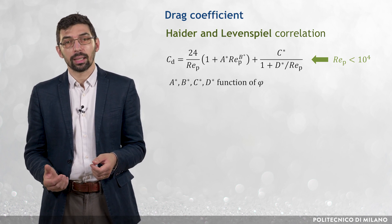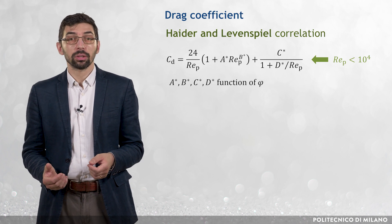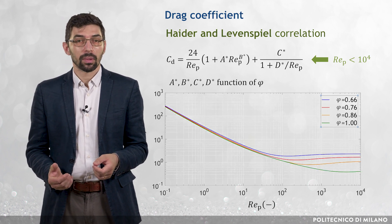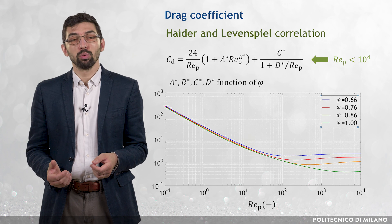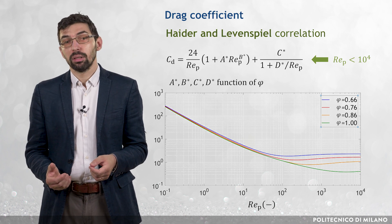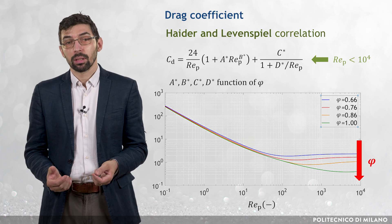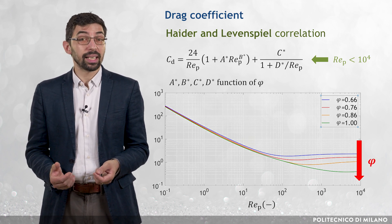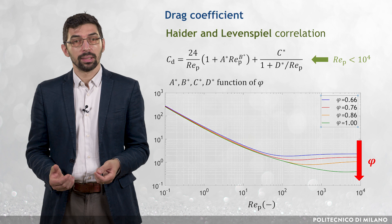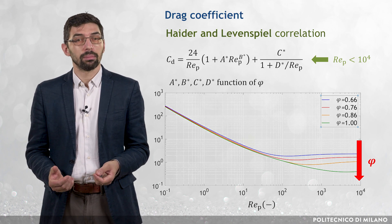where A*, B*, C* and D* are a function of the particle's sphericity. When Φ is equal to 1, the Heider and Levenspil formula reduces to the Schiller and Naumann formula. For lower Φ, it indicates higher Cd, especially when the particle Reynolds number is high.